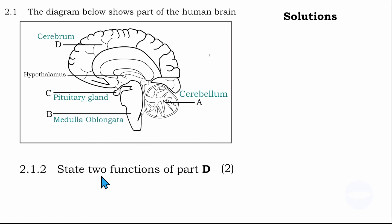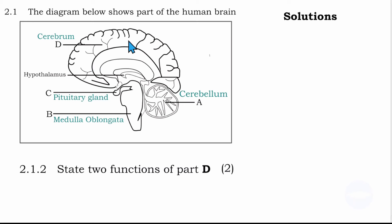The next question says: state two functions of part D. Part D is the cerebrum, so we have to state two functions of the cerebrum. The cerebrum is responsible for our thinking — when we think, we use the cerebrum. It also interprets all the senses in our body. Another function is that it controls all voluntary actions, like walking. It also controls involuntary actions and speech.